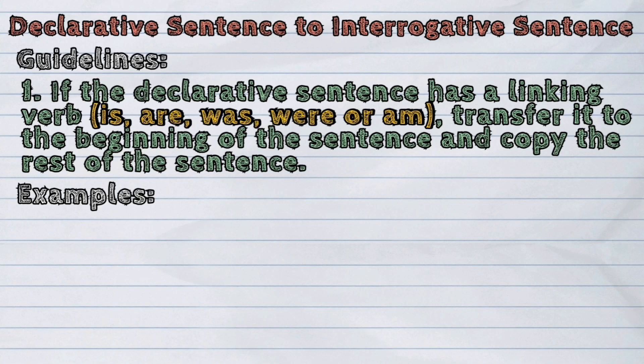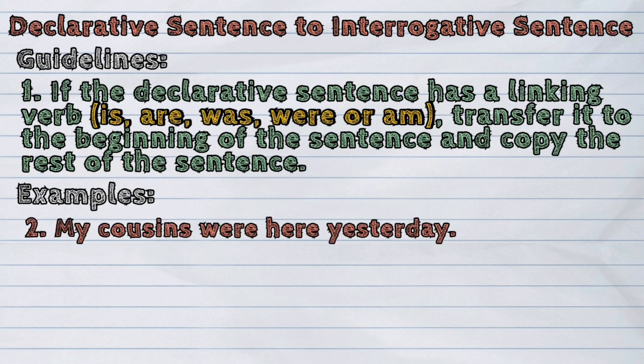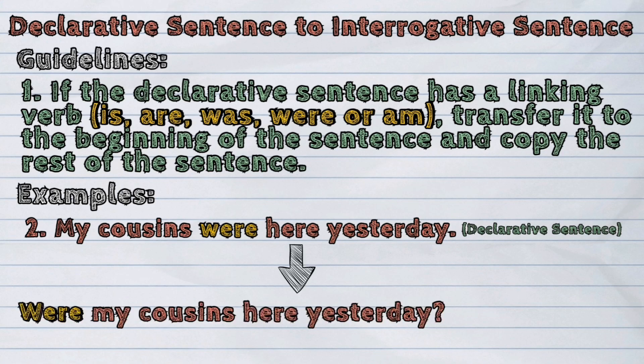Example number 2: My cousins were here yesterday. The linking verb in the sentence is 'were.' If we change it to interrogative, it will now become: Were my cousins here yesterday?